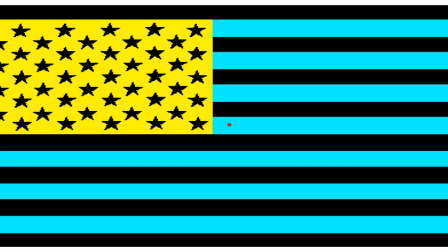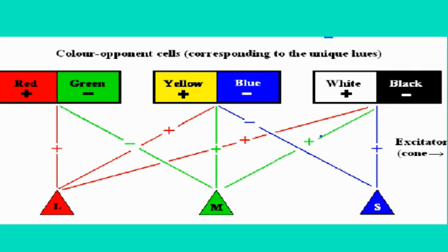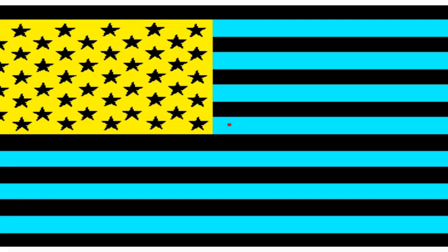The trichromatic theory does a better job of explaining color deficiencies, but the opponent process theory does a much better job of explaining the after-image effect.